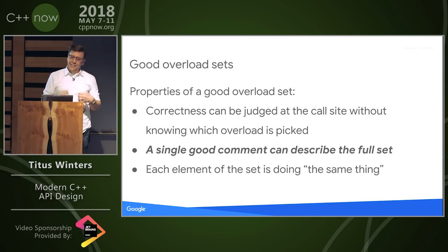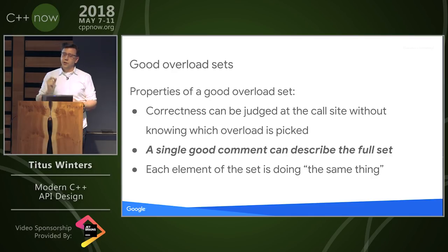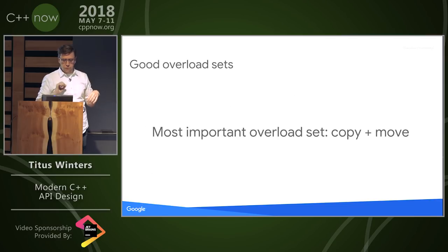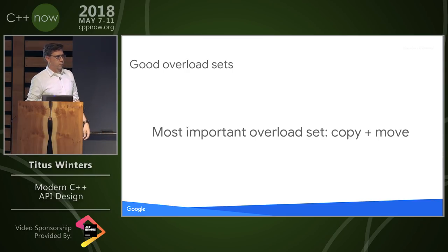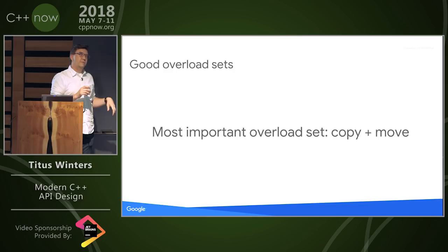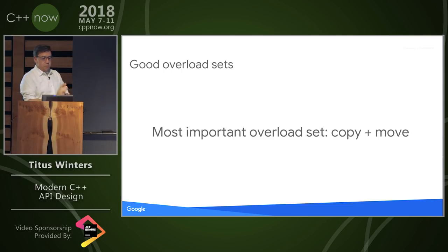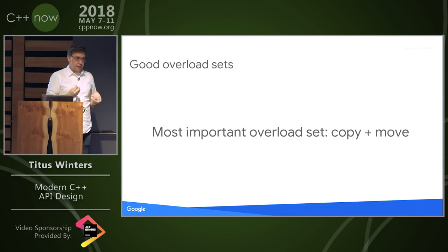When we start consciously treating overload sets as the base unit of design, we start seeing them in plain sight in other places. The most important overload set is one we've discussed a ton in the last few years but usually not in terms of being an overload set: copy versus move. Formulating copy and move as an overload set has great ramifications and really pays off the more you buy into it.